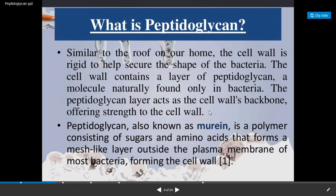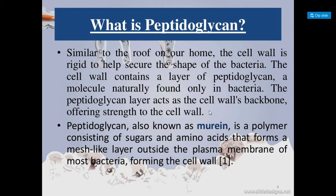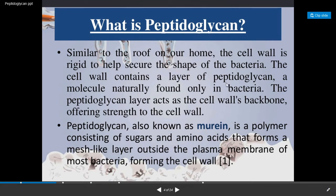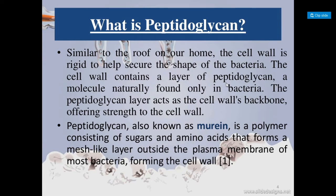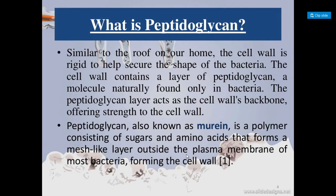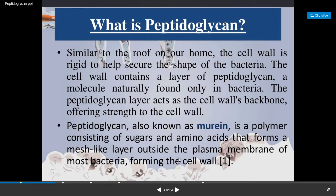In today's lecture we will see the structure of the peptidoglycan layer. The cell wall is a very rigid and complex structure that gives shape to the bacterial cell. It consists of a layer called peptidoglycan or murein, which acts as the cell wall's backbone and gives strength to it. This peptidoglycan layer is a polymer of sugar derivatives as well as amino acids, forming a mesh-like layer present outside the plasma membrane of bacteria — this mesh layer forms the cell wall.